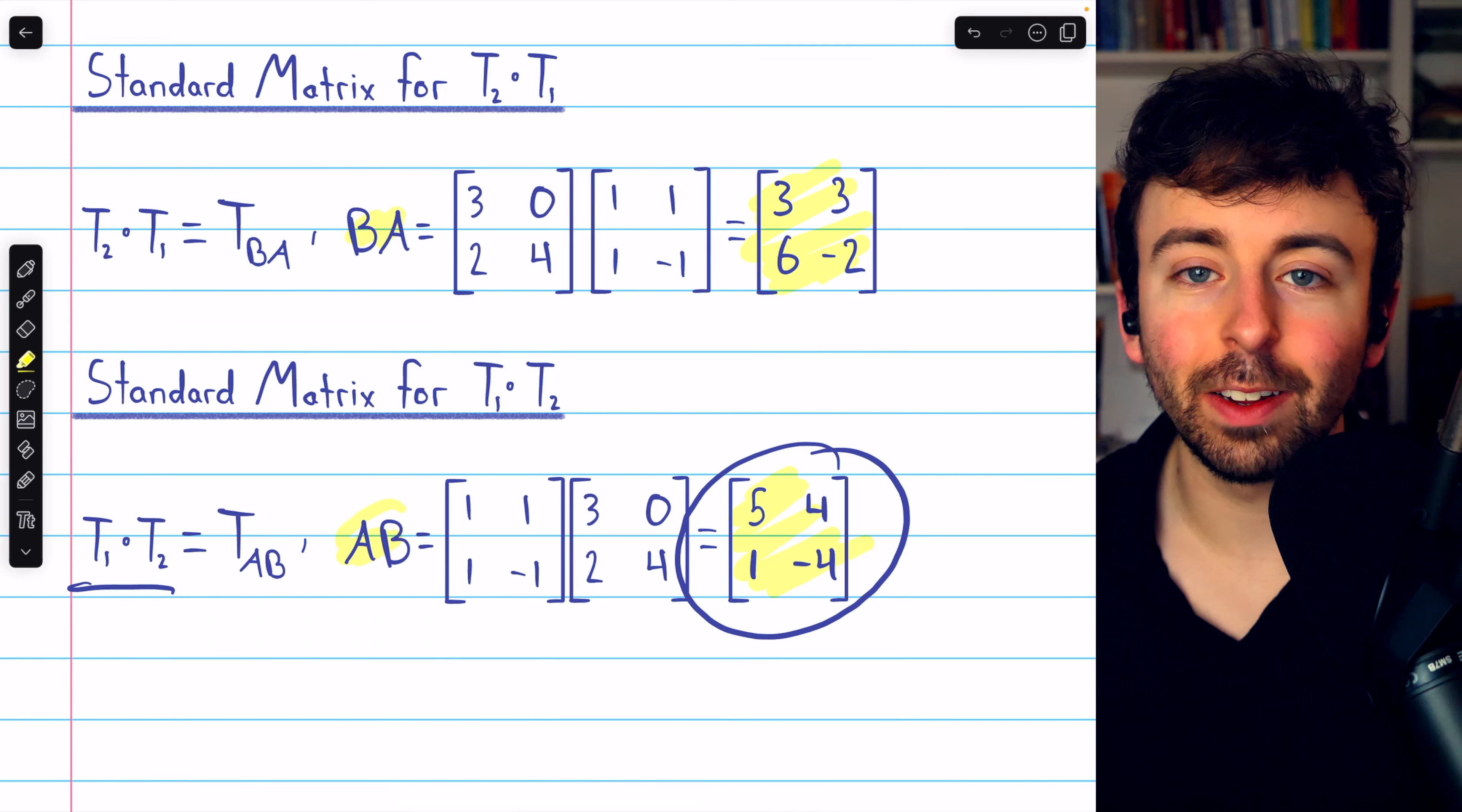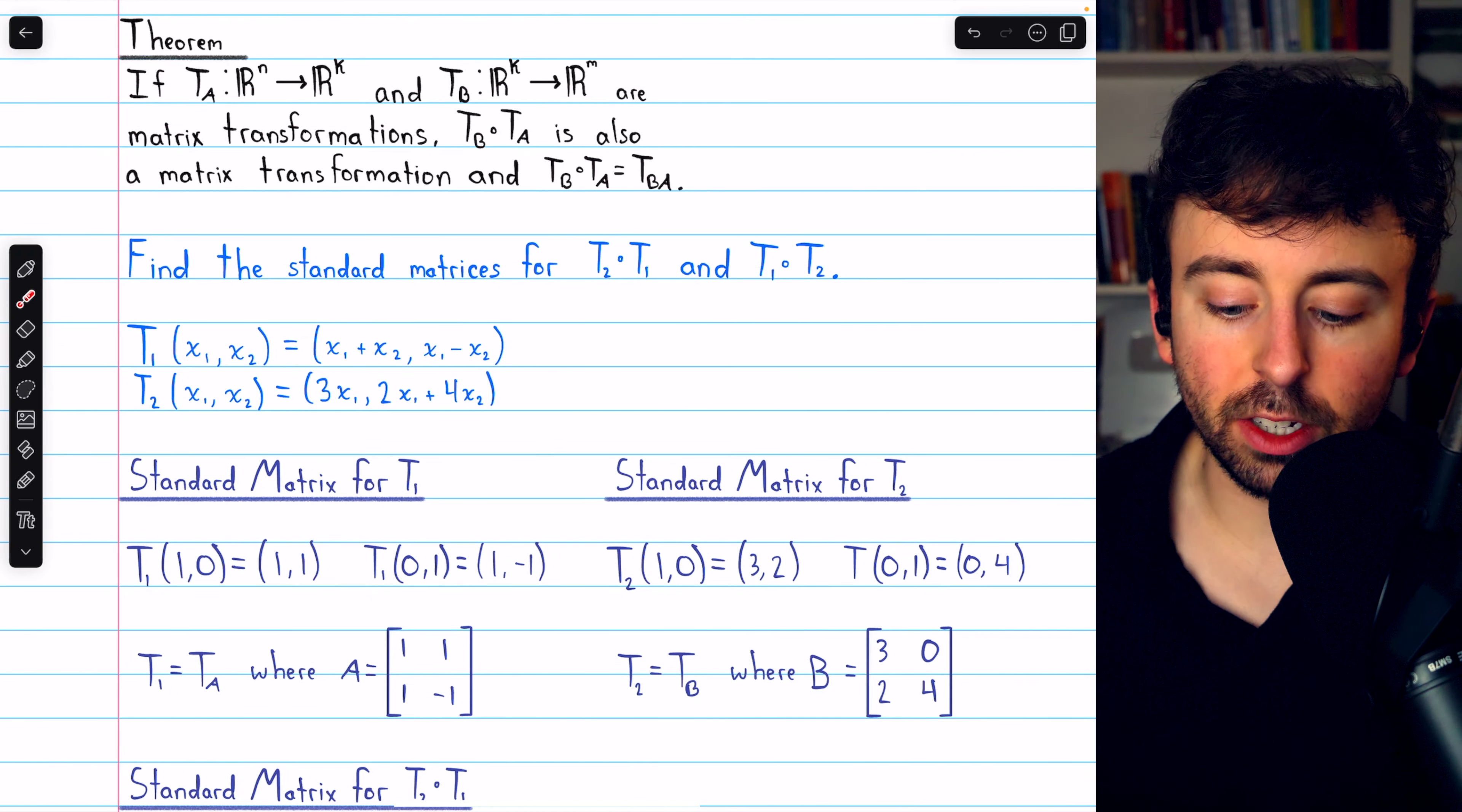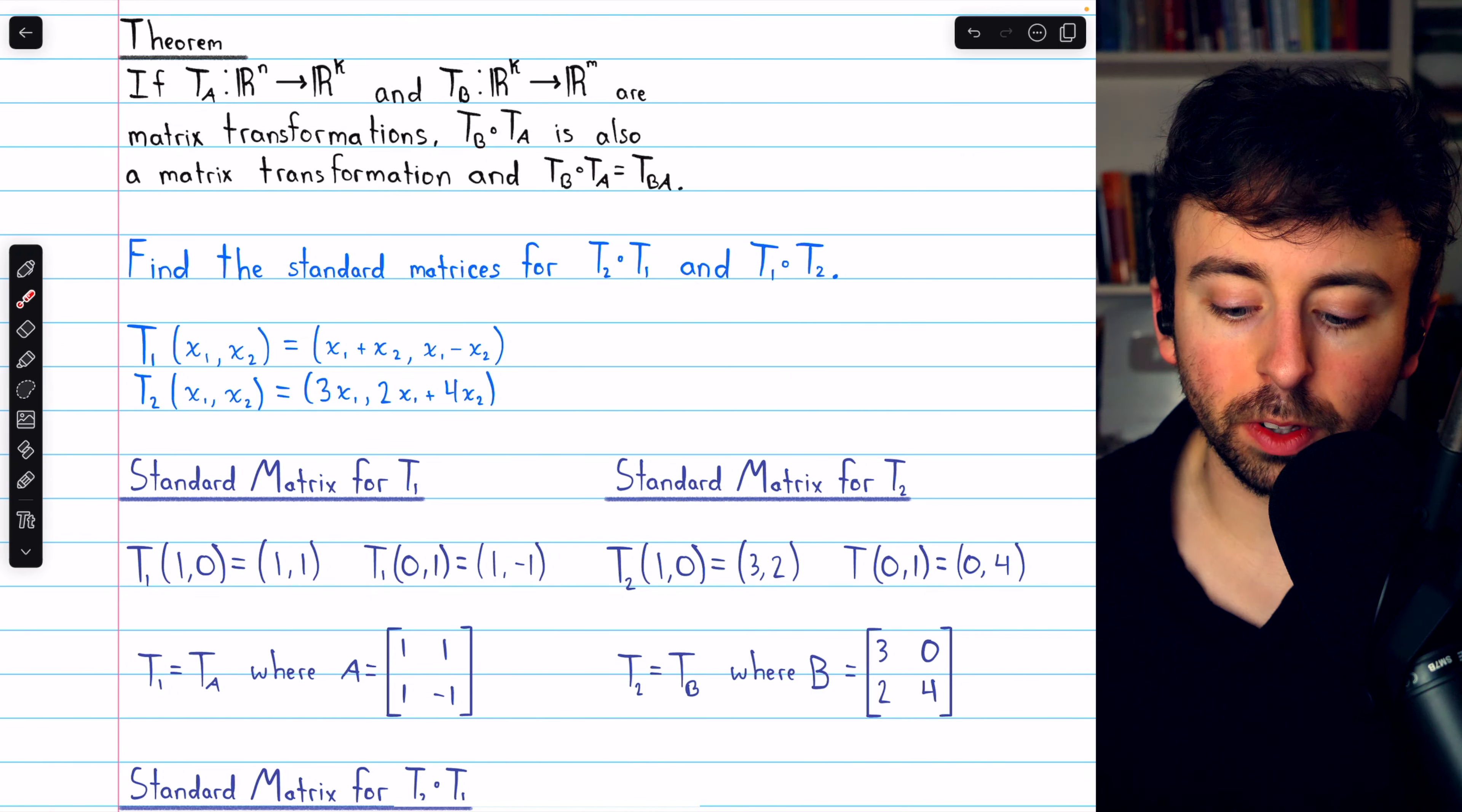So that's how to find the standard matrix for a composition of matrix transformations. We simply find the standard matrices for the individual transformations and then multiply them together in whatever order is appropriate. That order is the same order in which the transformations are written.